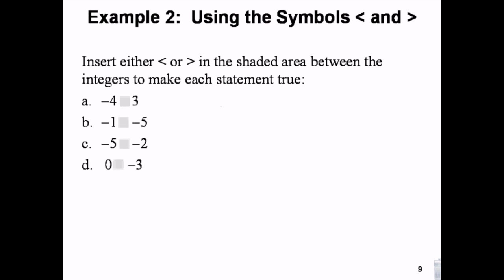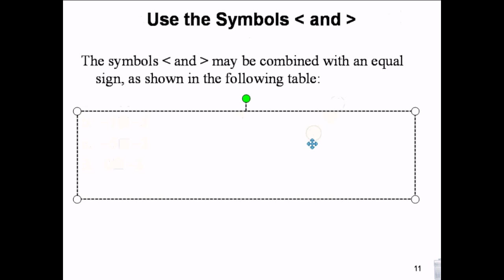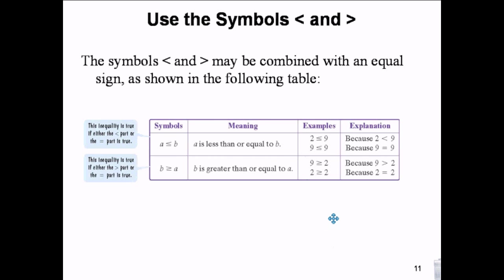We can combine the inequality symbol with an equal sign: less than or equal means it's true if it's less than OR if it's equal. Strictly less than — if nine is less than nine, that's false; you need the equal sign for the numbers to be the same.